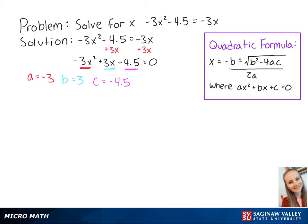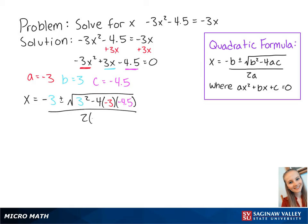So using the quadratic formula, we get x equals negative 3 plus or minus the square root of 3 squared minus 4 times negative 3 times negative 4.5, all over 2 times negative 3. This equals negative 3 plus or minus the square root of negative 45 over negative 6.